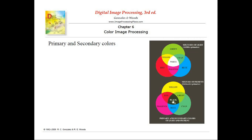Now let us turn to the interplay of primary and secondary colors in the case of pigments. For pigments, yellow, magenta, and cyan are the primary colors — just the opposite of light. When all three primaries of pigments combine, they produce black.